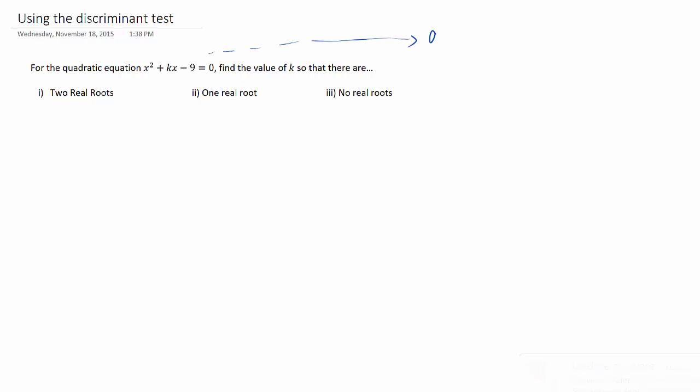So by request, we are going to do another discriminant test question, this time where k is the b value. Remember that we're not using the entire quadratic formula. All we're worried about here is just the discriminant.